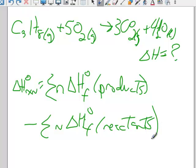But all that means is I'm going to look up in a table the heats of formation of CO2 and H2O, the products. I'm going to take the heat of formation of CO2 and multiply its coefficient, 3 in this case. That's what that little N means, 3 in this case.